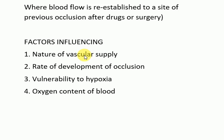The liver also has dual blood supply — the hepatic artery and portal vein — making it resistant to infarction. In contrast, renal and splenic circulations are end-arterial; they do not have any collateral or dual blood supply, so obstruction of these vessels will generally cause infarction.